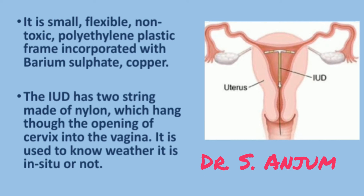It is a small, flexible, non-toxic polyethylene plastic frame incorporated with barium sulphate and copper. IUD has two strings made up of nylon which hang into the cervix and into the vagina. These strings are used to know whether the IUD is in-situ or not.